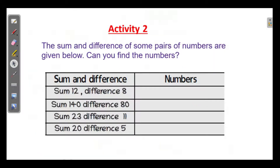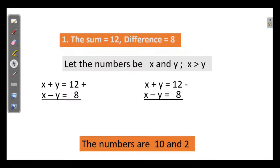The next activity: the sum and difference of some pairs of numbers are given. Can you find the numbers? Sum is given, difference is given — which are the numbers? If you learn how to find them, you can perform this as a number magic in front of your friends. Let us learn it first. Let us take the first pair: sum is 12 and difference is 8. We don't know the numbers, so we take them as x and y. Let the numbers be x and y, with x greater than y.